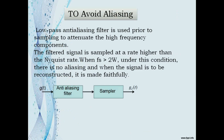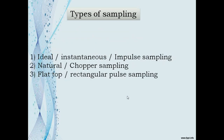In order to avoid aliasing, a low-pass anti-aliasing filter is used prior to sampling to attenuate high frequency components. The filtered signal is then sampled at a rate higher than the Nyquist rate, i.e., Fs > 2W. Under this condition, there is no aliasing and the signal can be faithfully reconstructed. G(t) is applied to the anti-aliasing filter, and the output is sampled at a rate greater than 2W to get G_δ(t).